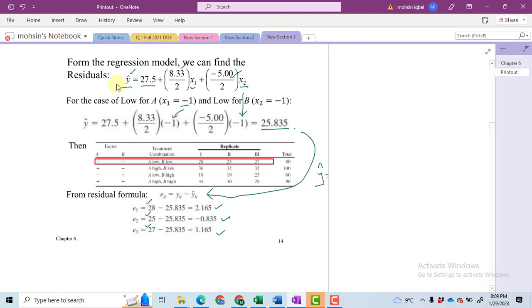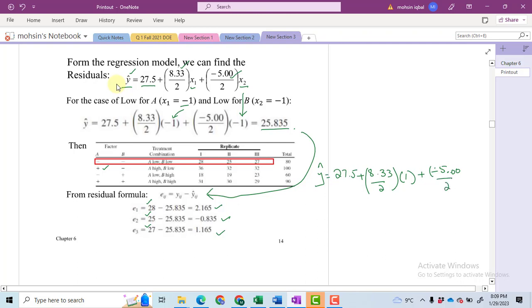That is, y bar is equal to 27.5 plus 8.33 divided by 2, multiplied by, now for the second we will take A at high level, plus minus 5.00 divided by 2, and then multiply it by minus 1.